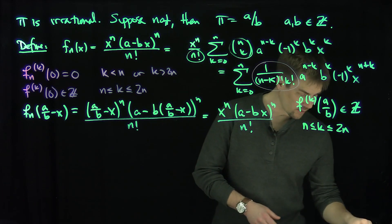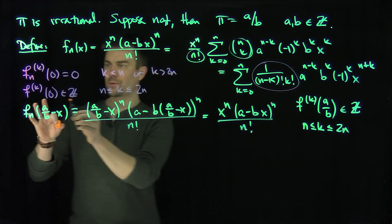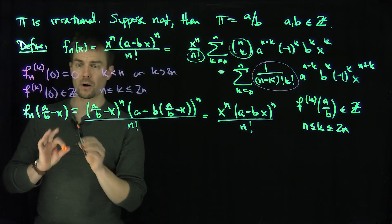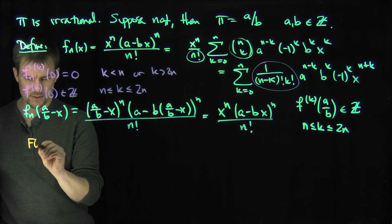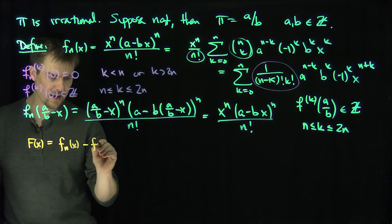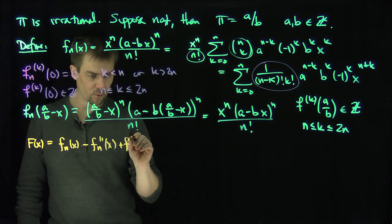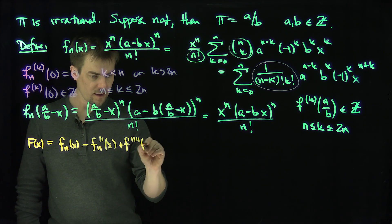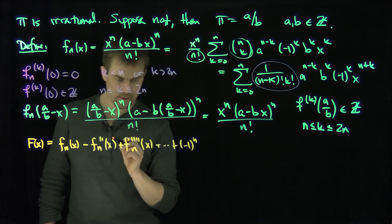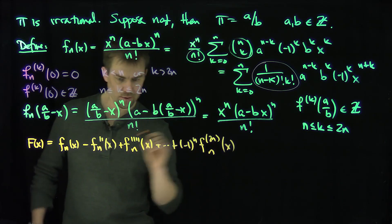So the whole point is that all the derivatives of this function at either pi, which is a over b, or 0 are integers. Now construct the function F(x), which is f_n of x minus f_n double prime of x, plus f_n to the fourth derivative of x, all the way down to negative one to the n, times f_n to the 2n-th derivative of x.